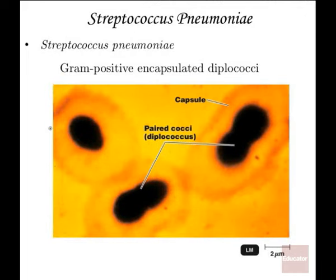Streptococcus pneumoniae has a capsule surrounding these gram-positive bacteria, and they are always arranged in pairs. Remember, gram-positive means the cell wall is on the outside. These diplococci are two spherical-shaped bacteria, and in the case of pneumoniae, they are surrounded with a capsule.